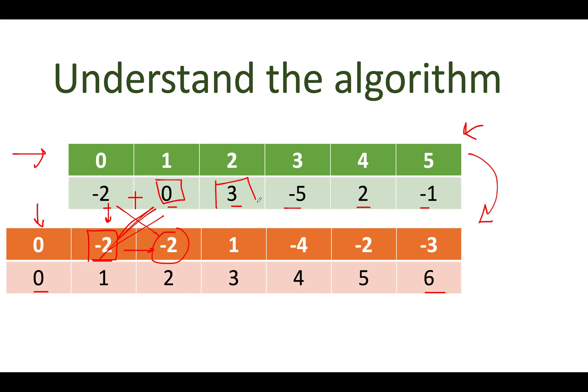Let's continue the process. What is the current element? Current element is 3. 3 plus minus 2 leads to the next element which is 1. 1 plus minus 5 leads to the next element which is minus 4. Minus 4 plus 2 leads to the next element which is minus 2. Minus 2 plus minus 1 leads to the next element which is minus 3. And now you have built the complete prefix sum array.